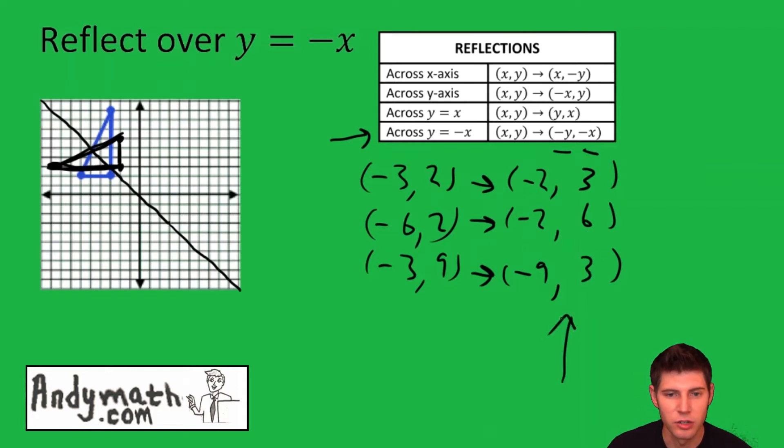Now plotting these new points that we got after the transformation: negative two, three is this point right here. Negative two, six is this point right here. And negative nine, three is this point right here.